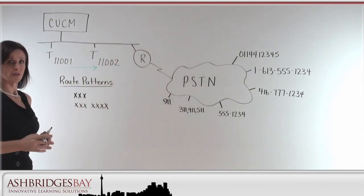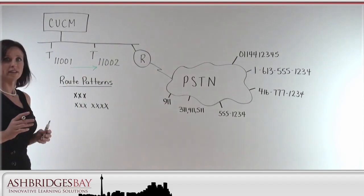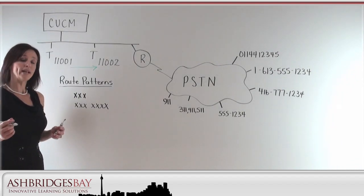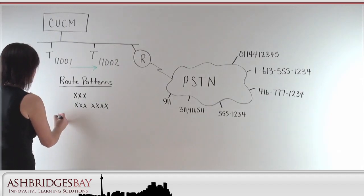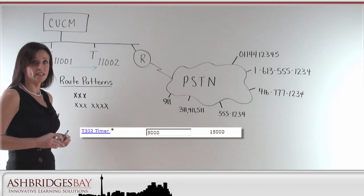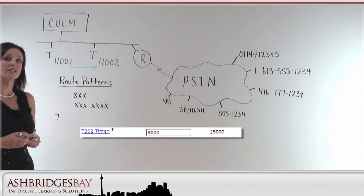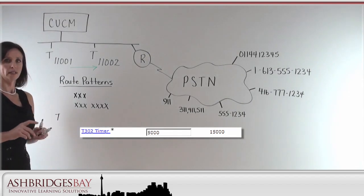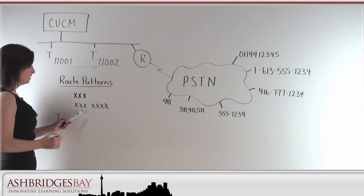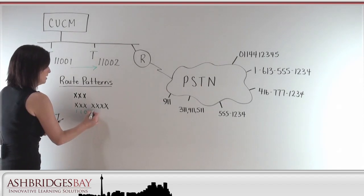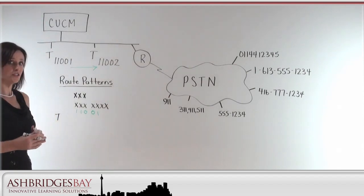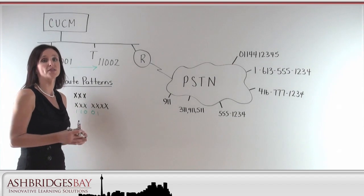Does that mean that the call manager is going to route that call out to 110? Or is it going to wait? What the call manager is going to do is wait. It waits for a value configurable by the T302 timer. The T302 timer is set by default to 15 seconds. Often, administrators will set that to a value of five seconds. So, I dial 110. I've matched the beginning of this pattern. I dial another zero. I dial a one. The call manager is going to wait five more seconds to see if any more digits are going to be entered.